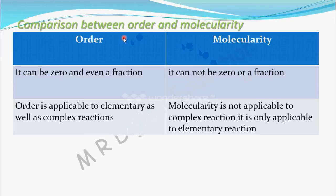This column is order and this column is molecularity. The first difference: order can be zero and even a fraction — you have seen zero order reaction and fraction order reaction. But molecularity cannot be zero or a fraction. Molecularity zero would mean there is no reacting species, no reactant species, so how can you get a product? There will be no reaction, so molecularity cannot be zero.